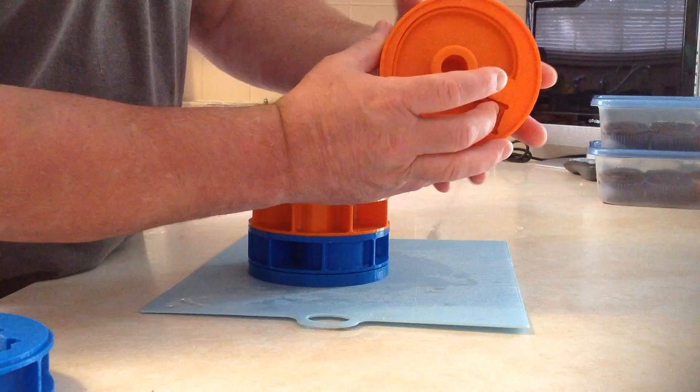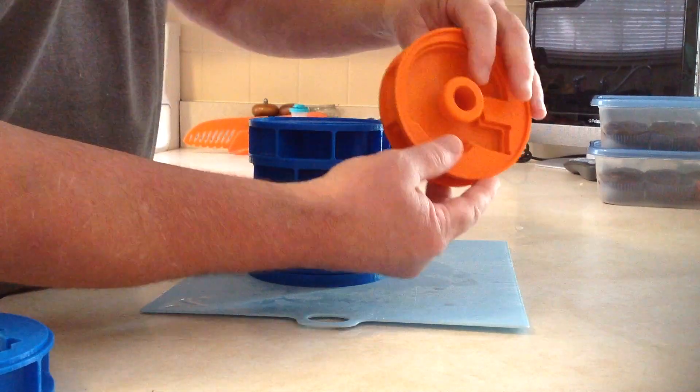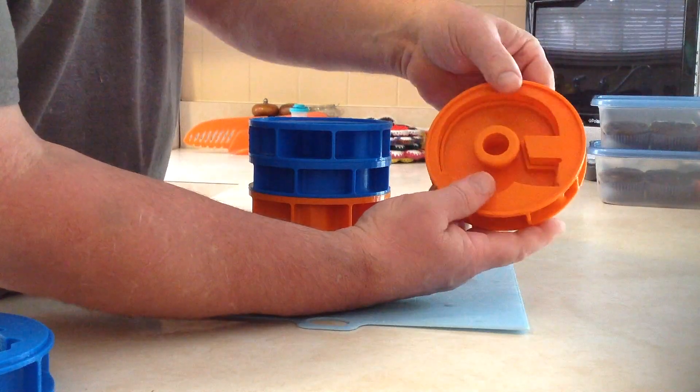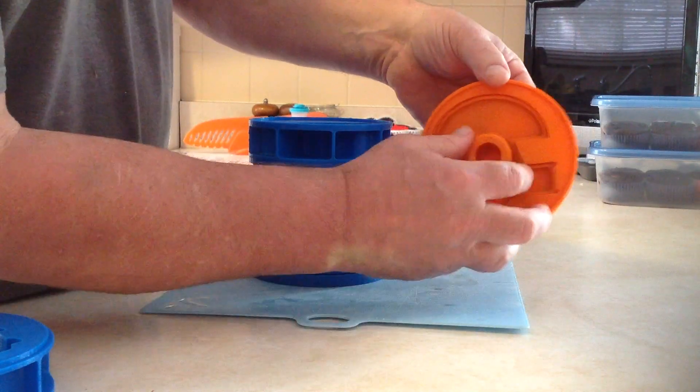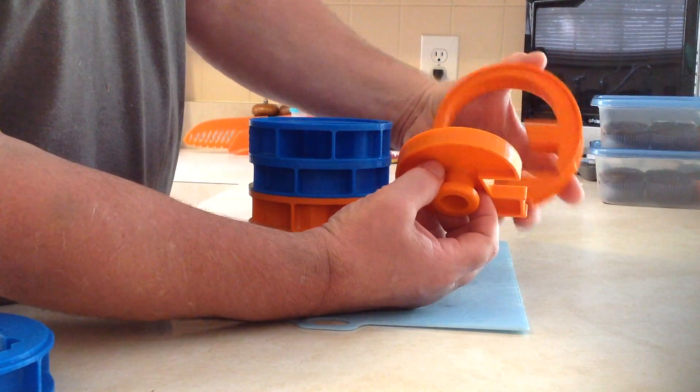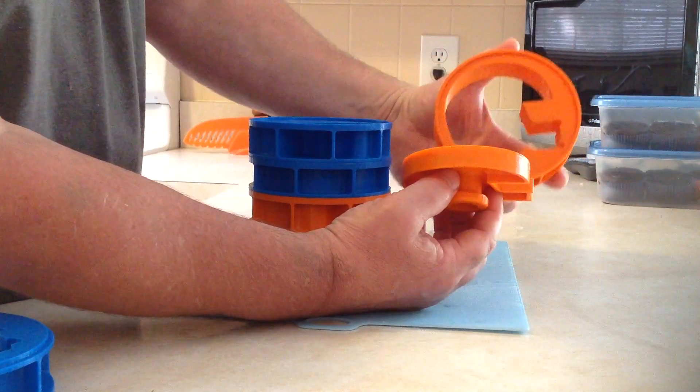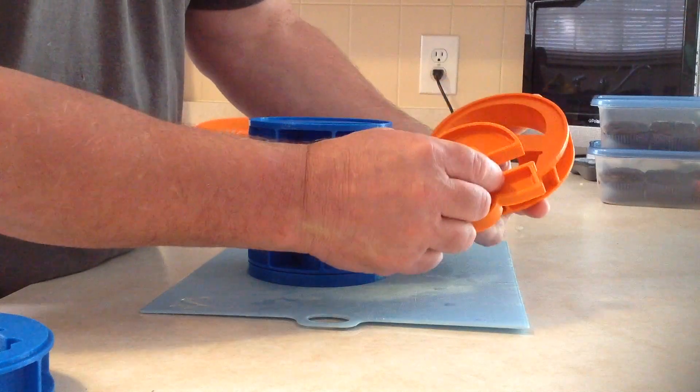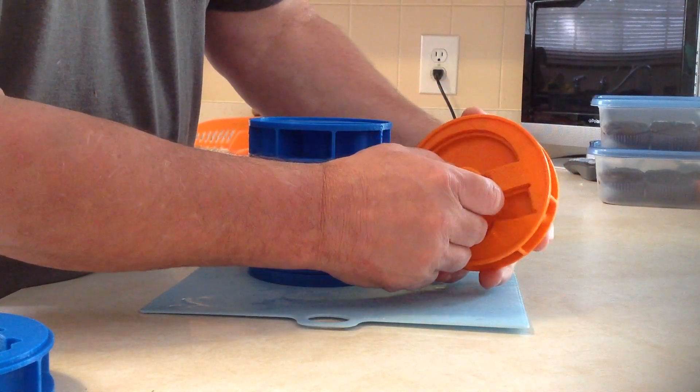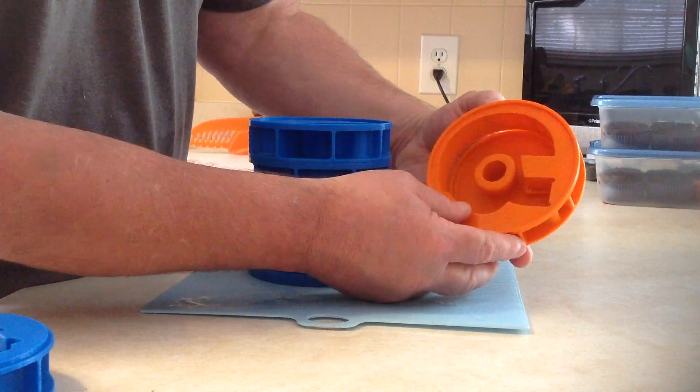This is the football mold. So if you want to have a tailgate party, you get to make up whatever team you want, whether that be a college team or NFL. You get to make the Perfect Patty Shaper football mold. And it's one of my favorites.